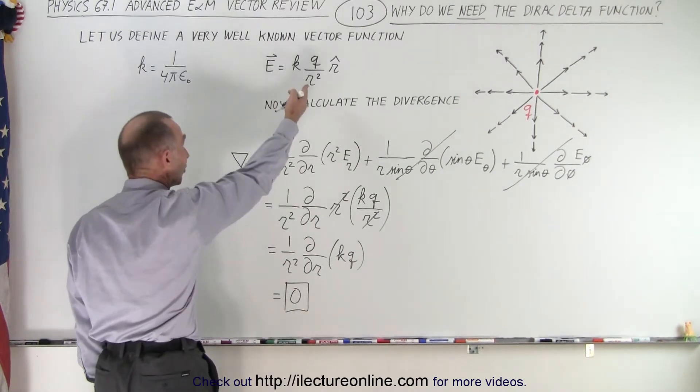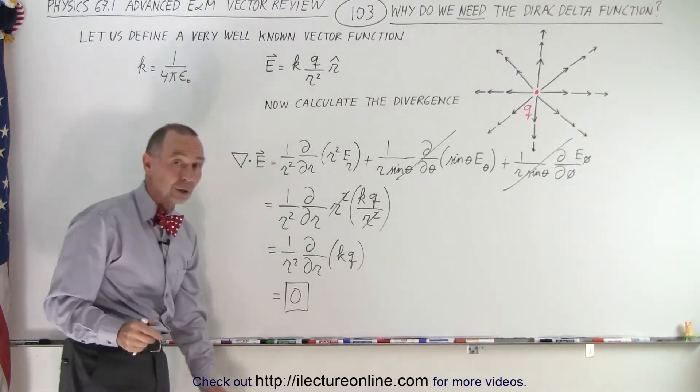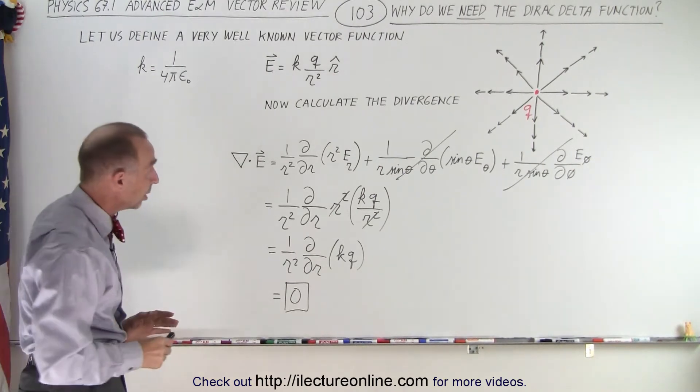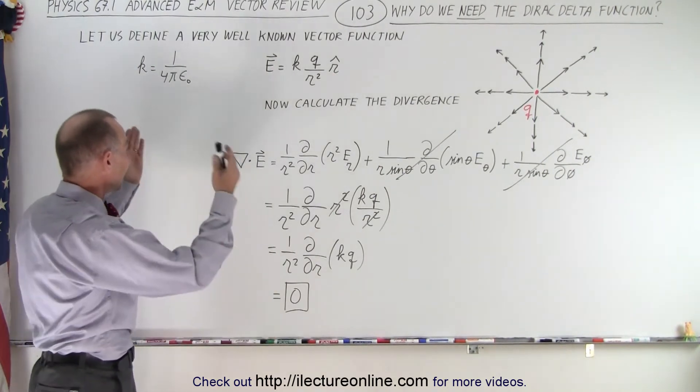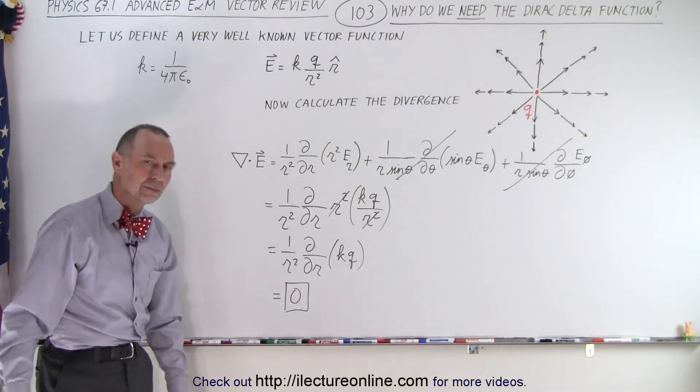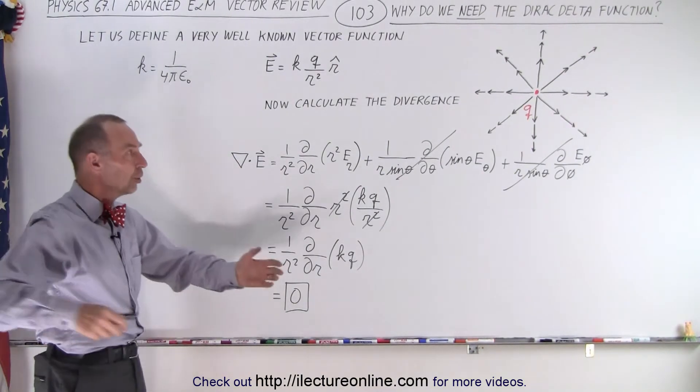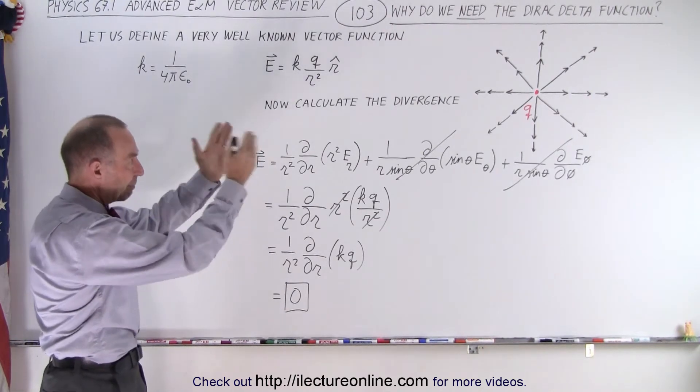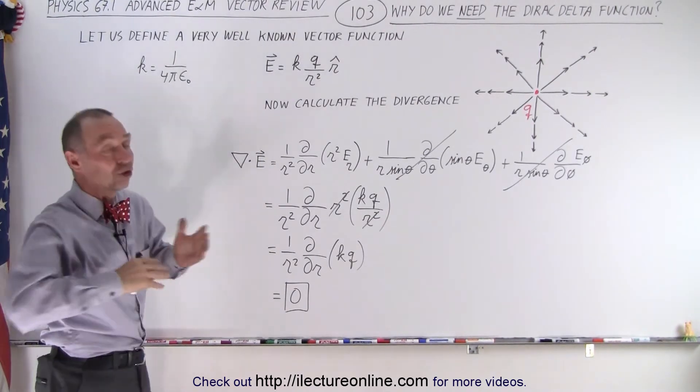this well-known function, that's the first function that we learn really anywhere in E and M, with Coulomb's law, we realize that the divergence is equal to 0. Hmm. And we know that can't possibly be, because it's clearly, by the graph when we look at it, that it shouldn't be 0.